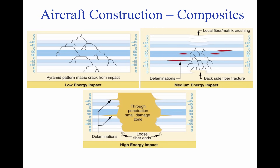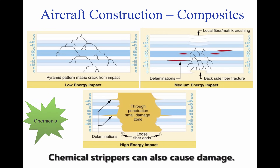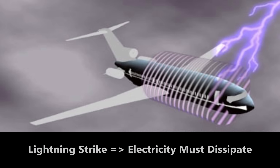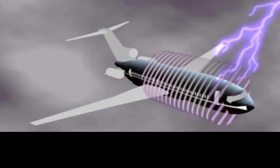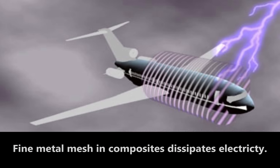Another problem with composites is that excessive heat can cause the resin to weaken. Heat from sunlight on pavement, or a small fire even when extinguished quickly, can cause damage. Also, chemical paint strippers are very harmful to use with composites. During a lightning strike, the aircraft needs to dissipate the energy around the body of itself to a safe level. Electricity generally flows around the skin of the aircraft because it offers the path of least resistance. Fiberglass, for example, is an electrical insulator, which makes it not able to diffuse electricity well. To handle this, a fine metal mesh is often placed around the outside of an aircraft.